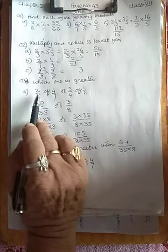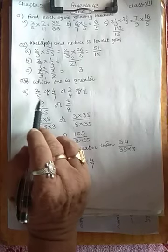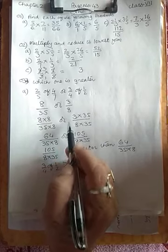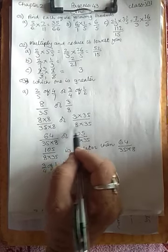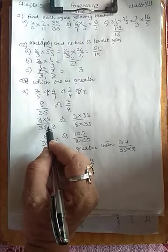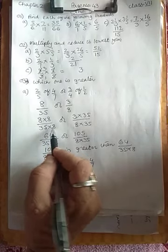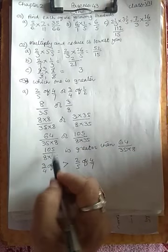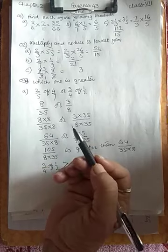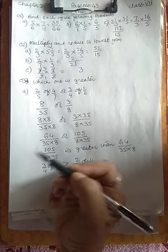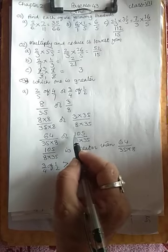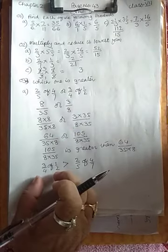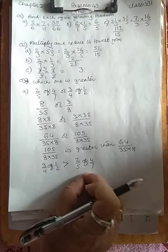To summarize: first do the simplification — 2×4=8 over 5×7=35, and 3×1=3 over 4×2=8. Then make denominators the same by multiplying the first fraction by 8 and the second by 35. The numerator which is greater means that fraction is greater — so 3/4 of 1/2 is greater than 2/5 of 4/7.